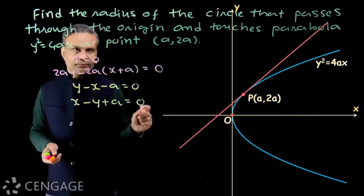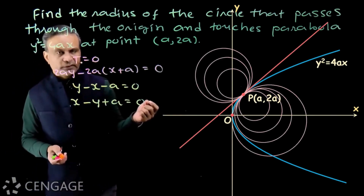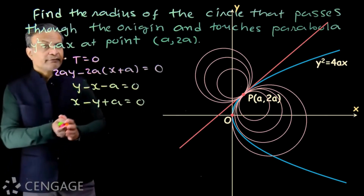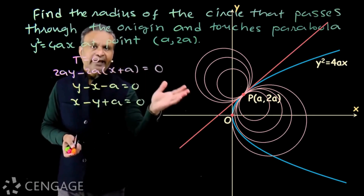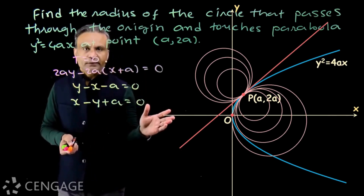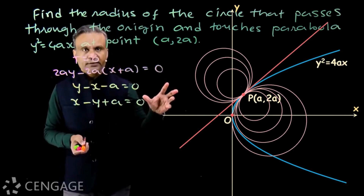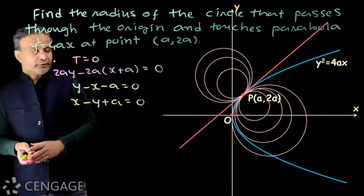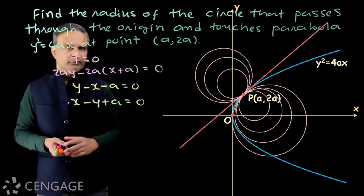The circle touching the parabola at point P will also touch the tangent to the parabola at point P. We can draw infinitely many circles touching this tangent line at point P — there is a family of circles touching the tangent line at point P. But we want the member of this family which also passes through the origin. We can use the concept of family of circles touching a given line at a given point.